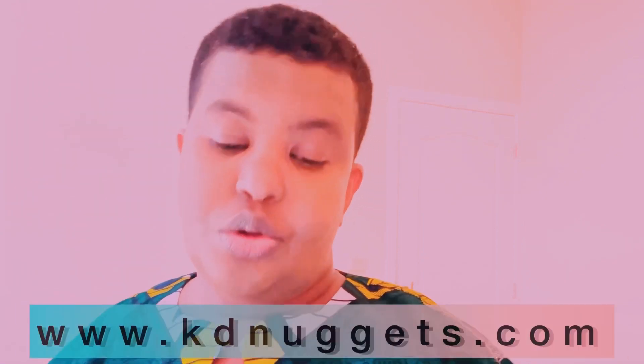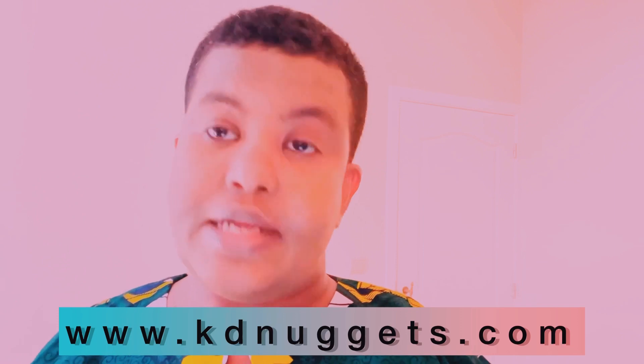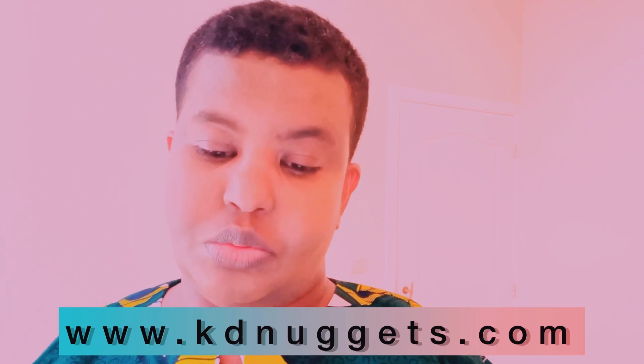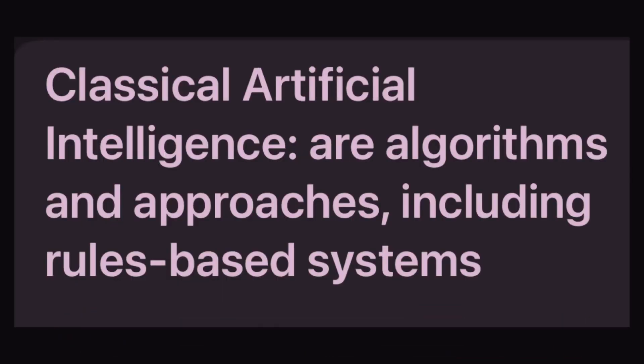We are going to look first at the KD Nuggets website, which defines classical artificial intelligence as follows: classical artificial intelligence are algorithms and approaches including rules-based systems.